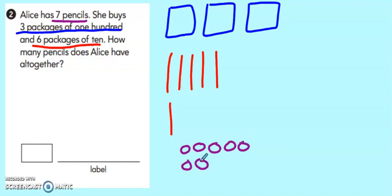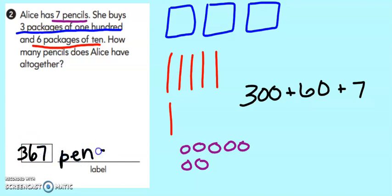Now that I have my drawing done, I can also do an expanded form. I see I have 300 plus, I have six 10s, which is 60, plus seven ones. 300 plus 60 plus seven gives me 367 pencils. Don't forget your label when you're doing your work.